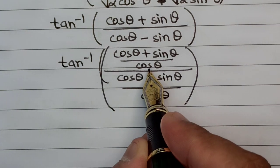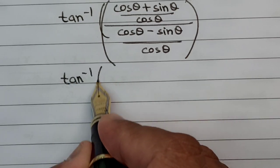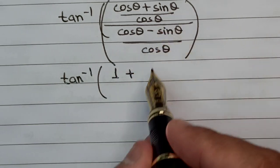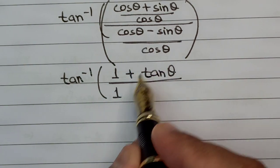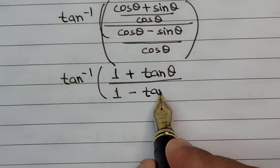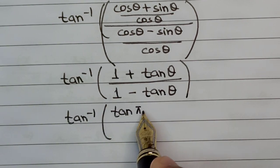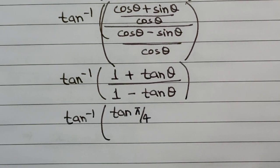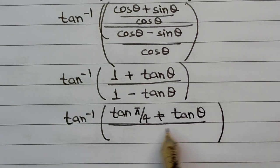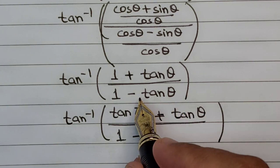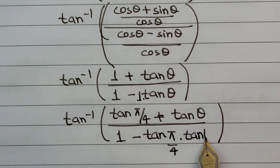Shifting cos θ individually into each term, we get tan inverse of (1 + sin θ/cos θ) divided by (1 − sin θ/cos θ), which is tan inverse of (1 + tan θ) divided by (1 − tan θ). Here, 1 can be written as tan(π/4) and so we have tan(π/4) + tan θ in the numerator and 1 − tan(π/4)·tan θ in the denominator.